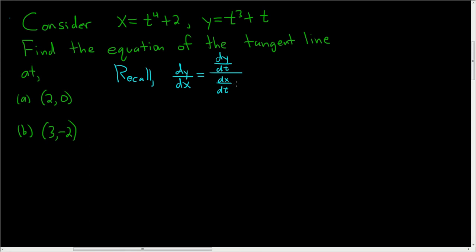Now in order to use this formula we need to find t first. So let's go ahead and do part A. First we have to find t. We know that x is 2 and y is 0. So 2, that's x, is equal to t to the fourth plus 2, and 0, that's y, is equal to t cubed plus t.